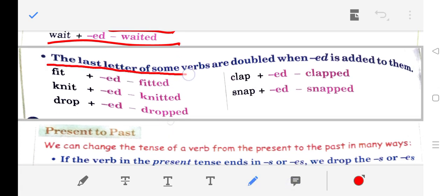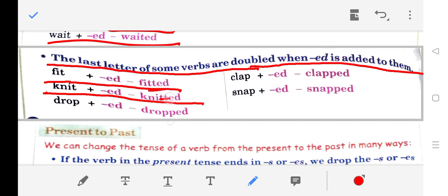The last letter of some verbs are doubled when 'ed' is added to them. Fit + ed = fitted (t doubled). Knit + ed = knitted (t doubled). Drop + ed = dropped (p doubled). Clap + ed = clapped (p doubled). Snap + ed = snapped (p doubled).